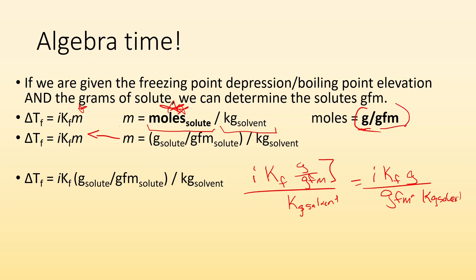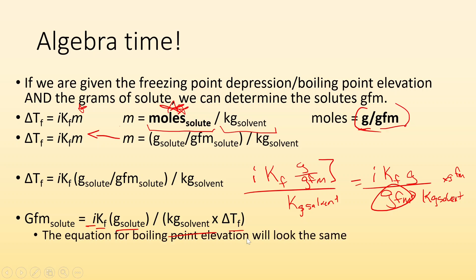So, now I can get the GFM by itself. I do a little rearranging. I times each side by GFM, and I divide each side by the freezing point depression, and I get a much nicer looking equation. I get GFM of the solute equals I times KF times the grams of solute that you use divided by the kilograms of solvent times the freezing point depression.